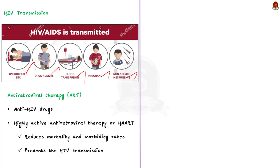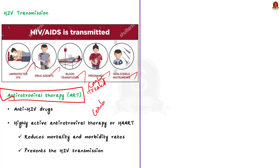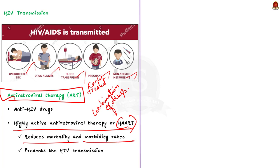Antiretroviral therapy uses a combination of drugs that suppress HIV replication — these drugs are called highly active antiretroviral therapy, or HAART. This treatment reduces mortality and morbidity rates among HIV-infected people and improves their quality of life. It also prevents HIV transmission by suppressing HIV replication. An important concept here is U=U, that is undetectable equals untransmittable. If a person with HIV maintains an undetectable viral load through daily antiretroviral therapy, they cannot sexually transmit the virus to others.